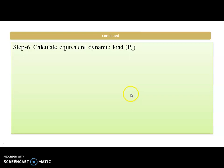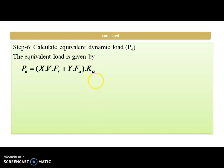The next step is to calculate the equivalent dynamic load PE. As there are different loads acting on the bearing, we calculate the equivalent load by the equation PE = X × V × FR + Y × FA × KA, where X is the radial factor, V is the rotation factor, FR is the radial load, Y is the axial factor, FA is the axial load, and KA is the application factor.